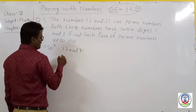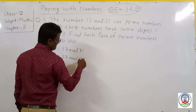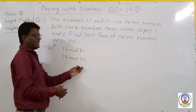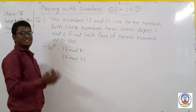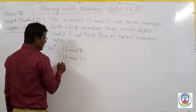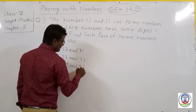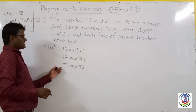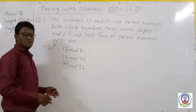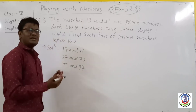The second pair will be 37 and 73. Both are prime numbers and their digits 3 and 7 are the same. The third pair will be 79 and 97. Both are prime numbers and their digits 7 and 9 are the same.